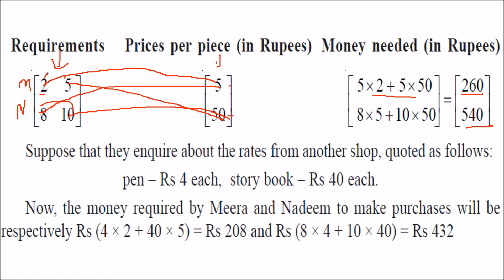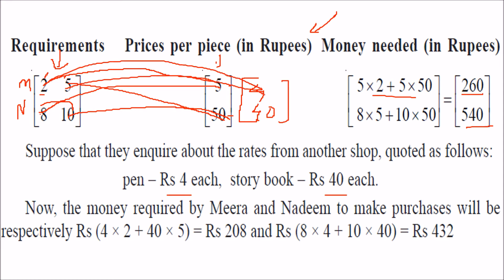Now suppose they inquire about rates at another shop — I am building the preface for matrix multiplication. If the pen is four rupees each and the storybook is forty rupees, we replace the price per piece by four and forty. The result would be two into four plus five into forty, which is 208 for Meera, and eight into four plus ten into forty, which is 432 for Nadeem.